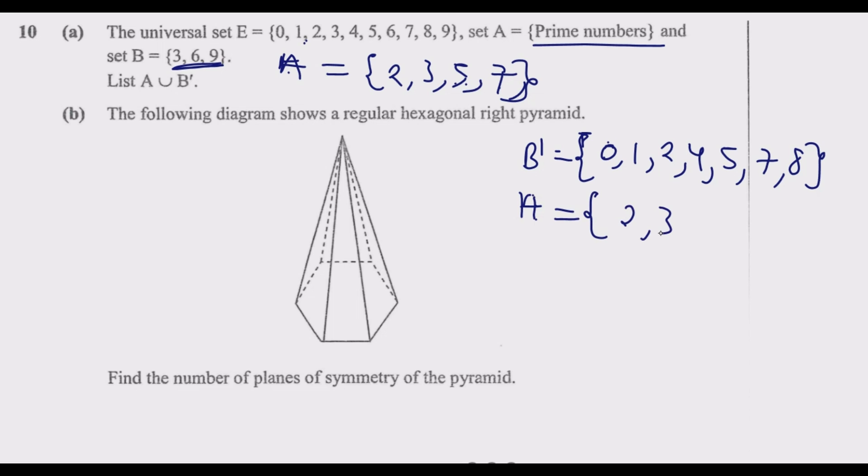Which we are calling B complement. Then we combine them with what is in A, which is 2, 3, 5, and 7. Then we form a new set. So this set should be A union B complement.